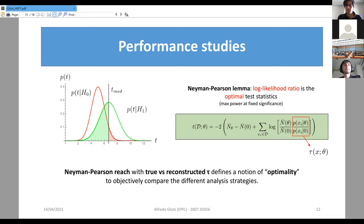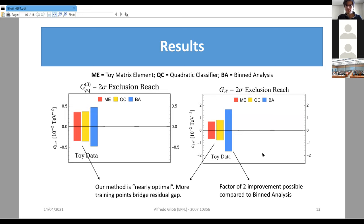Follow-up question: have you tried to improve the traditional binned method with machine learning? Response: When you do bins, you are approximating part of the full likelihood — integrating over some variables and approximating it as a step function. What machine learning does is fit the full likelihood over the full parameter space. So improving the binned analysis with machine learning doesn't seem particularly useful, because machine learning itself is already doing the most that you can do.